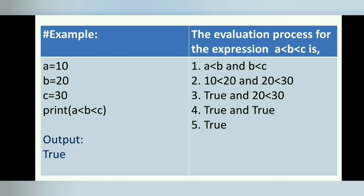Example 1: open the Python IDE or any text editor, type this code and run it. Here a=10, b=20, c=30. Print a is less than b is less than c — the output is true. The expression is internally treated as a is less than b AND b is less than c. a is less than b is true because 10 is less than 20. b is less than c is also true because 20 is less than 30. The final value is true because true AND true gives true.